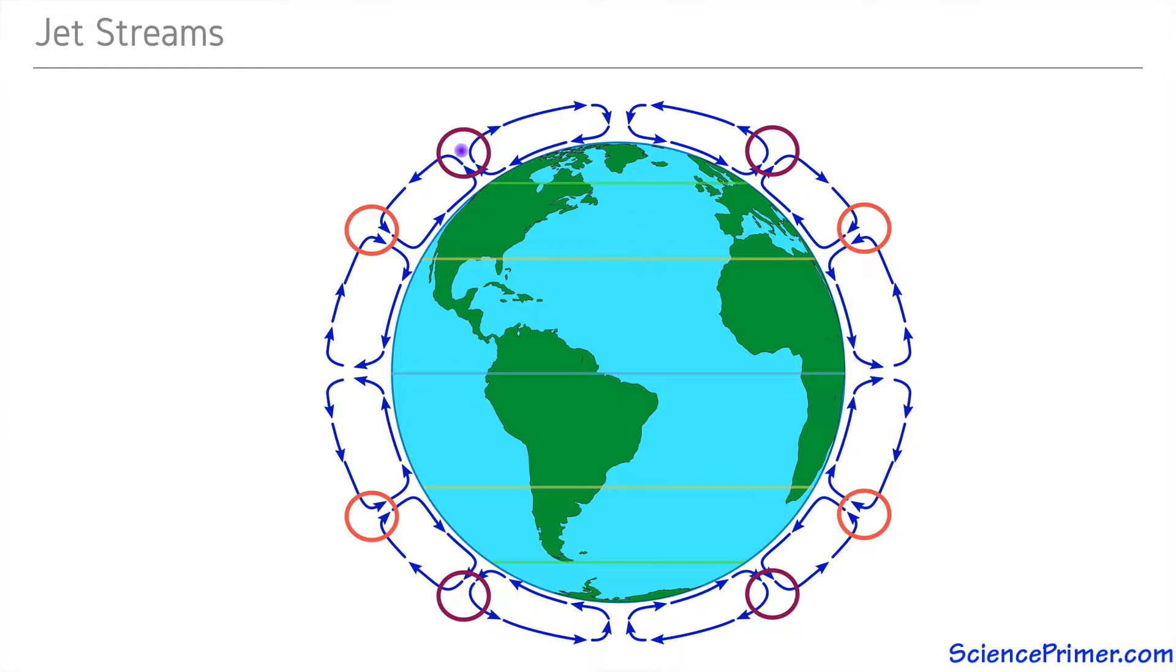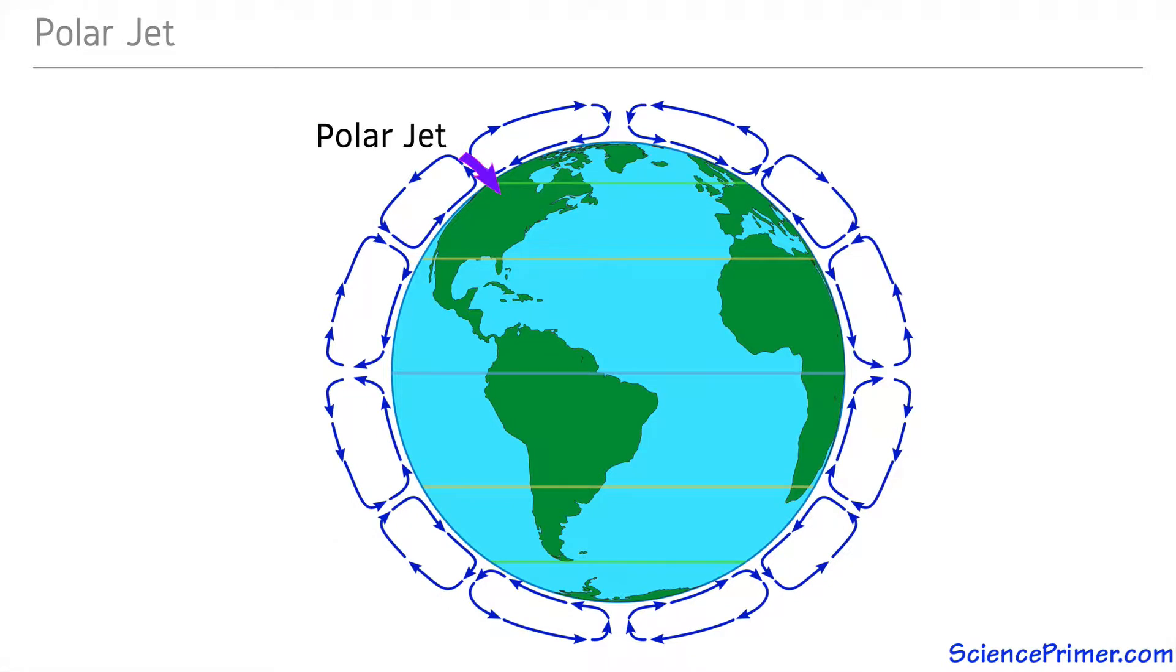The jet stream that forms between the polar and Ferrel cells is called the polar jet. It is a relatively small region of fast-moving air near the top of the troposphere. The jet can be thought of as a fast-moving river of air flowing through a sea of slower-moving air. The jet flows west to east across the upper atmosphere where the two cells meet.